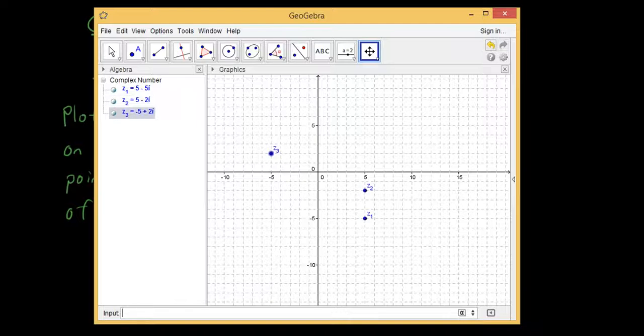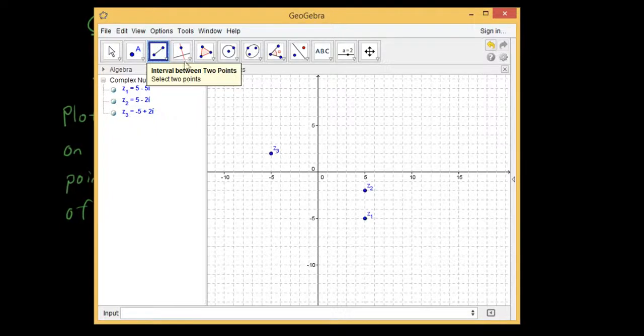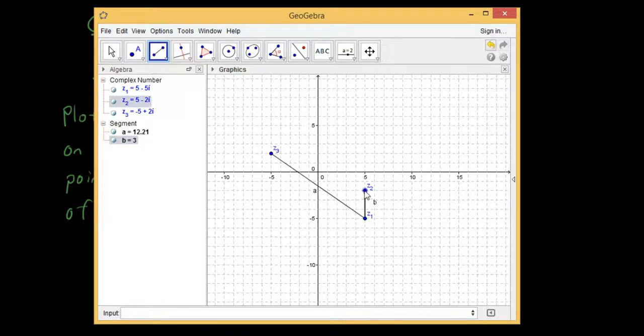And you will see that if we join up the three points using the segment tool, interval between two points, so join them together, you can see that we have a triangle. So that's pretty cool.